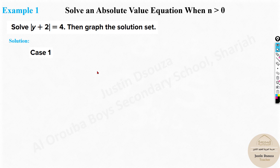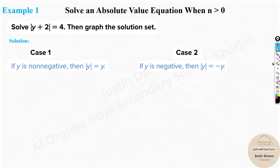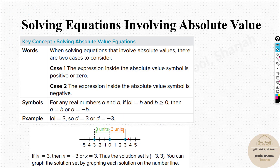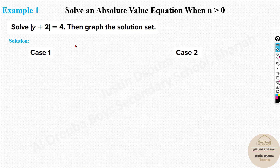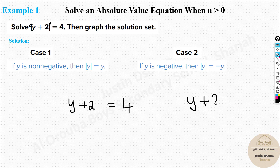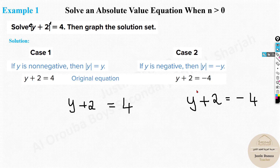When solving an absolute value problem, you must keep two cases in mind. Case 1: the expression inside is non-negative. Case 2: the expression inside is negative. The value inside — say y plus 2 — can be positive or negative. The easy way to remember this in an exam: forget the absolute value lines and just write the equation. Case 1: y plus 2 equals 4. Case 2: y plus 2 equals negative 4. That's the only difference.